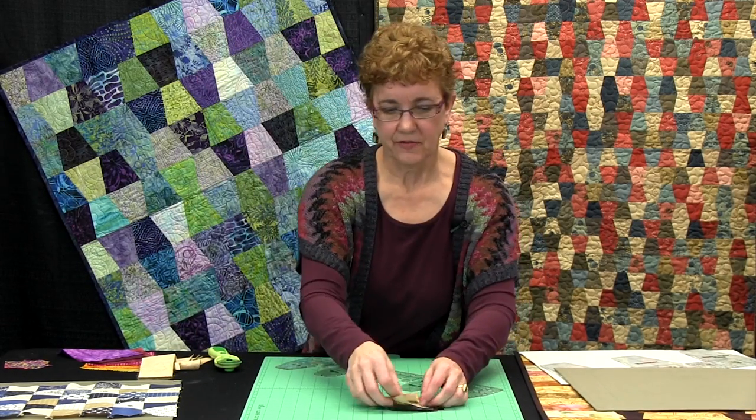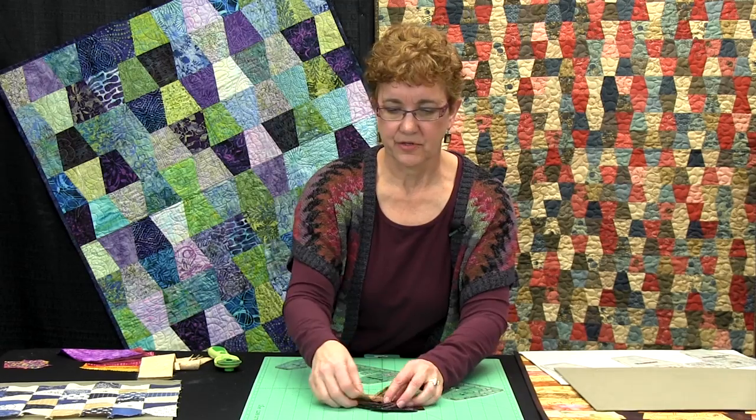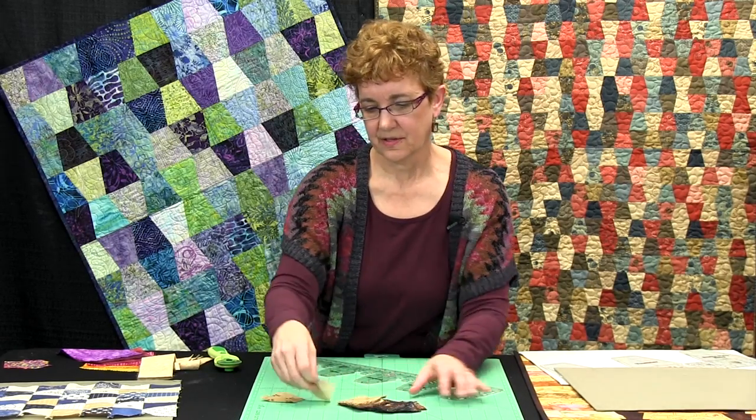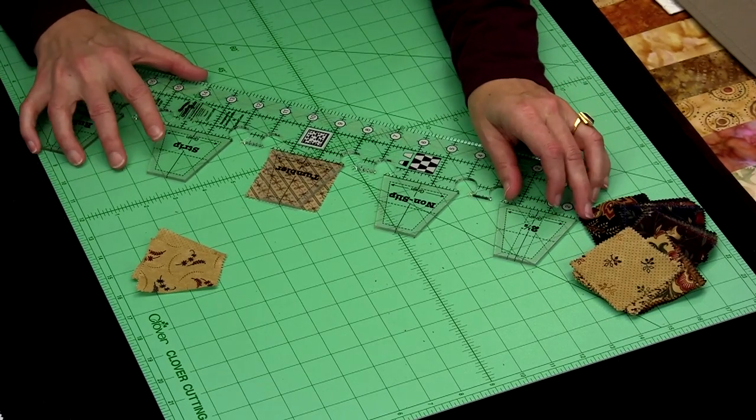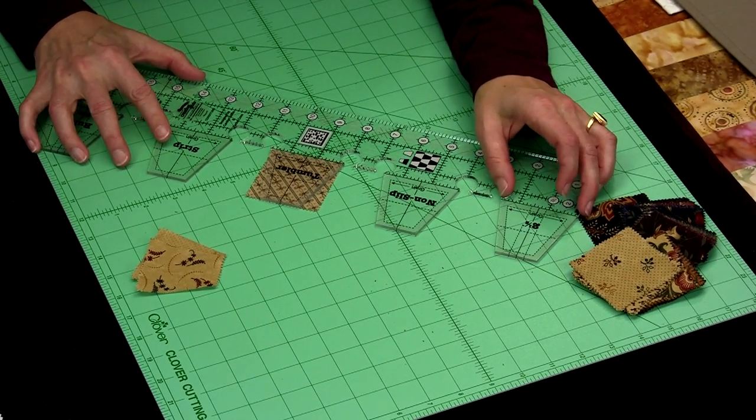Here we have a stack of 2½ inch squares, and I'm sure you have collections of these. You can put the ruler on one of these 2½ inch squares, and I'll cut 3 or 4 at the same time.